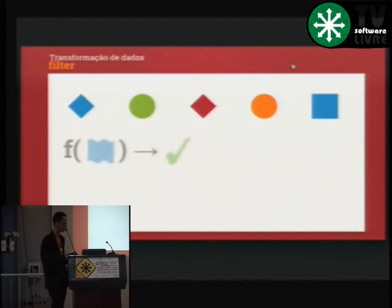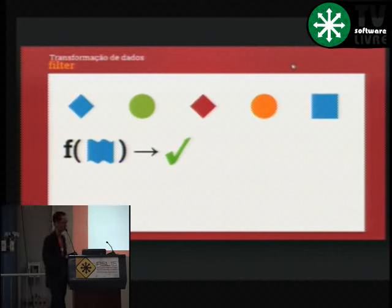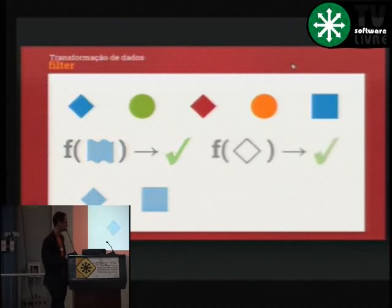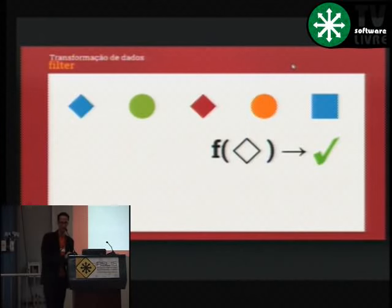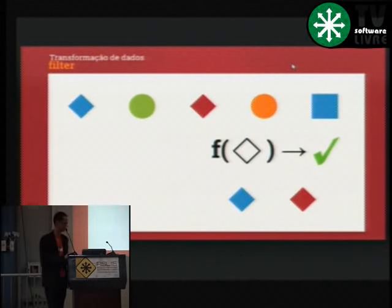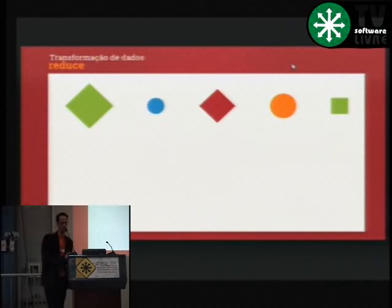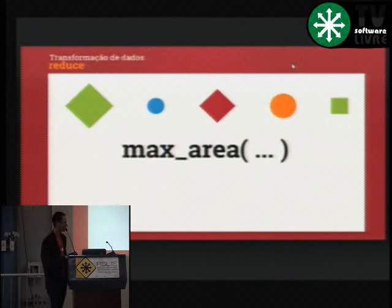Um outro exemplo é o de filtro. Eu estou filtrando elementos de cor azul — a saída vai ser elementos de cor azul. De forma semelhante, posso filtrar losangos — a saída me retorna dois losangos, um azul e um vermelho. E para quem é mais familiar com o paradigma map reduce, posso ter uma função de reduce, que vai receber dois elementos e retornar um terceiro elemento do mesmo tipo. Eu quero reduzir figuras a uma única figura — pegar qual é a maior. Implemento uma função que calcula a área, compara duas áreas, e retorna o elemento de maior área.